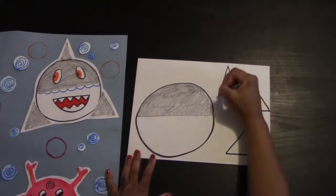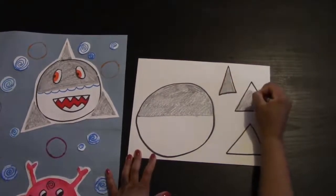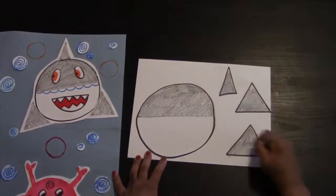After you finish coloring half your circle, we're going to finish coloring in the rest of the triangles. They're all going to be gray.